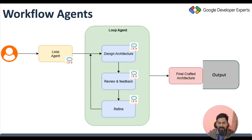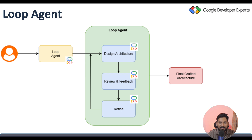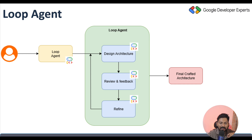Now let's talk about the loop agent. We'll create an architecture reviewer multi-agent system. The first sub-agent creates a cloud architecture design for a web application. The second sub-agent reviews the design, the third refines it based on the review feedback. This loop continues until there are no issues, or you can set a maximum iteration — for example, review only two times then give the output. This is the loop agent, which runs continuously until a condition is met.